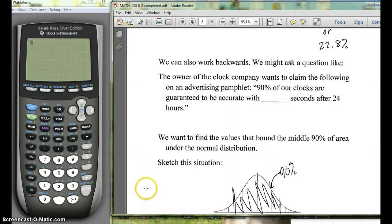So here's a problem in section 6-2. It says the owner of the clock company wants to claim the following on an advertising pamphlet: 90% of our clocks are guaranteed to be within blank seconds after 24 hours.